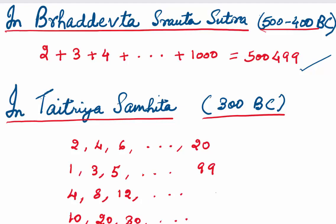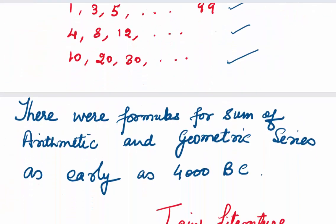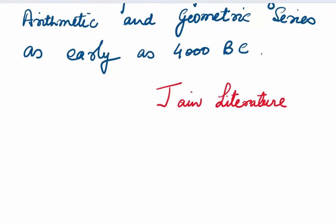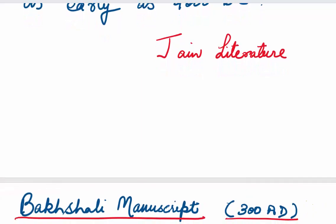Let's look at the Taithriya Samhita, which dates back to 300 BC. You see a number of arithmetic progressions. The first one: 2, 4, 6, going up to 20 — first term is 2, common difference is 2, and the nth term is 20. In the second one, first term is 4 and common difference is 4 — the series is infinite. The third and fourth are also arithmetic progressions, the fourth having first term 10 and common difference 10. According to the Jain literature, there were formulas for the sum of arithmetic and geometric series as early as 4000 BC, meaning that during the Vedic times, series were being used and the sum of terms of an arithmetic progression was being found.